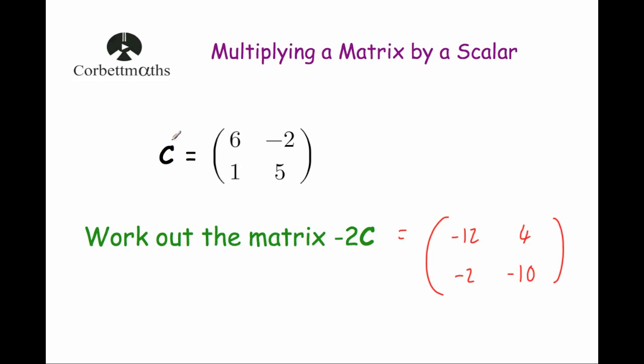So if matrix C is [6, -2; 1, 5], then the matrix minus 2C would be [-12, 4; -2, -10].